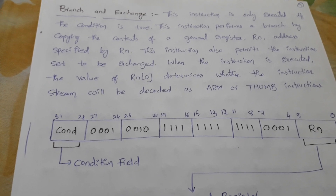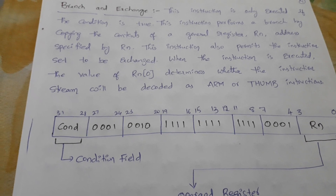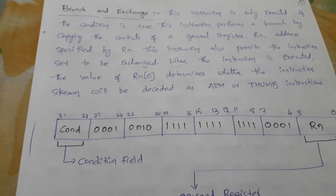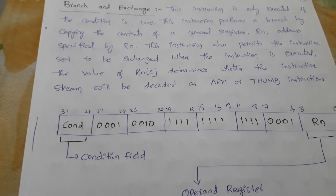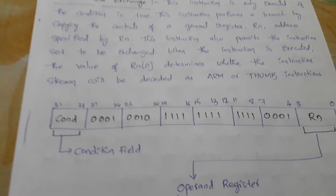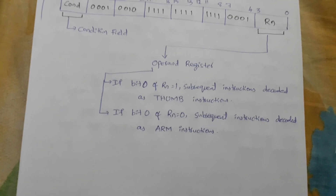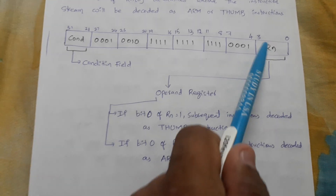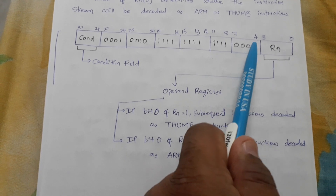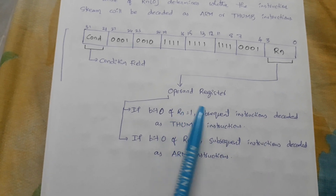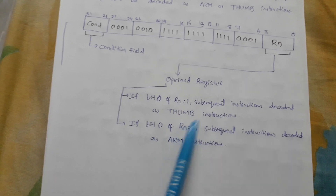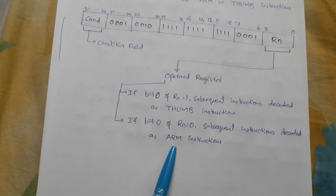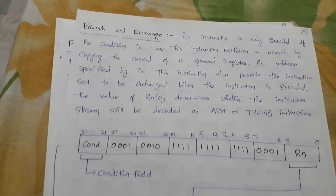This branch and exchange instruction also permits the instruction set to be exchanged when the instruction is executed. The value of Rn bit 0 determines whether the instruction stream will be decoded as ARM or Thumb instructions. For Rn bits 0 to 3, we have 4 bits total as the operand register: if bit 0 equals 1, Thumb instructions; if bit 0 equals 0, ARM instructions.